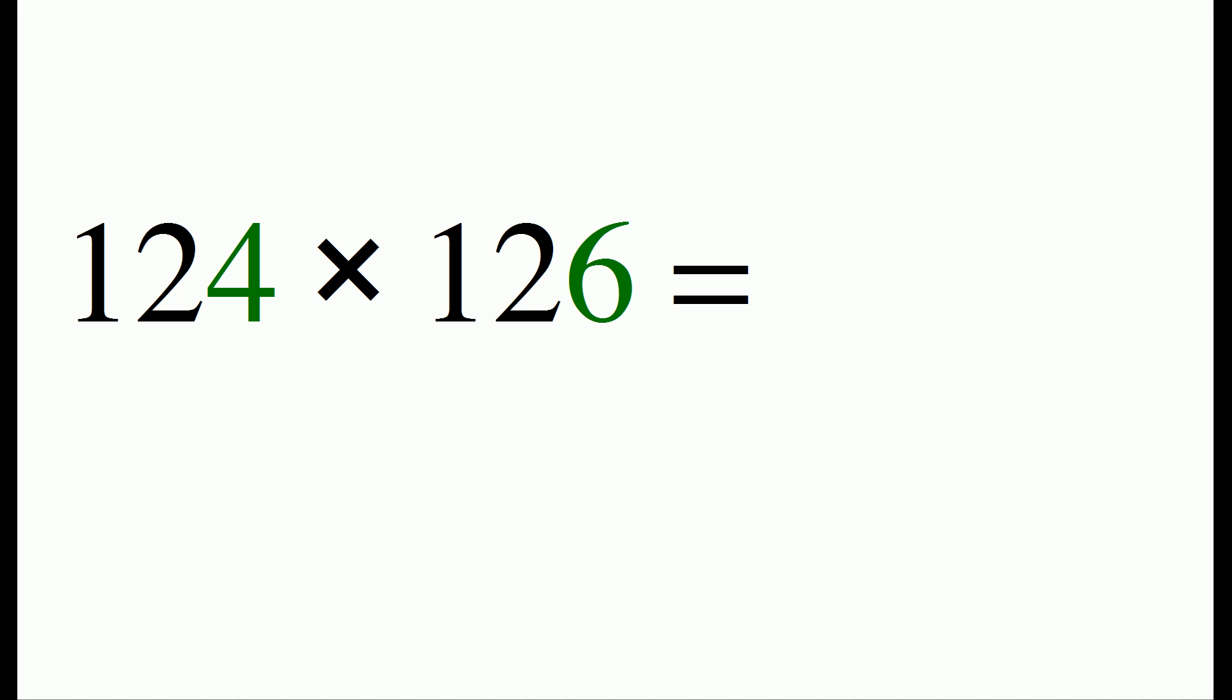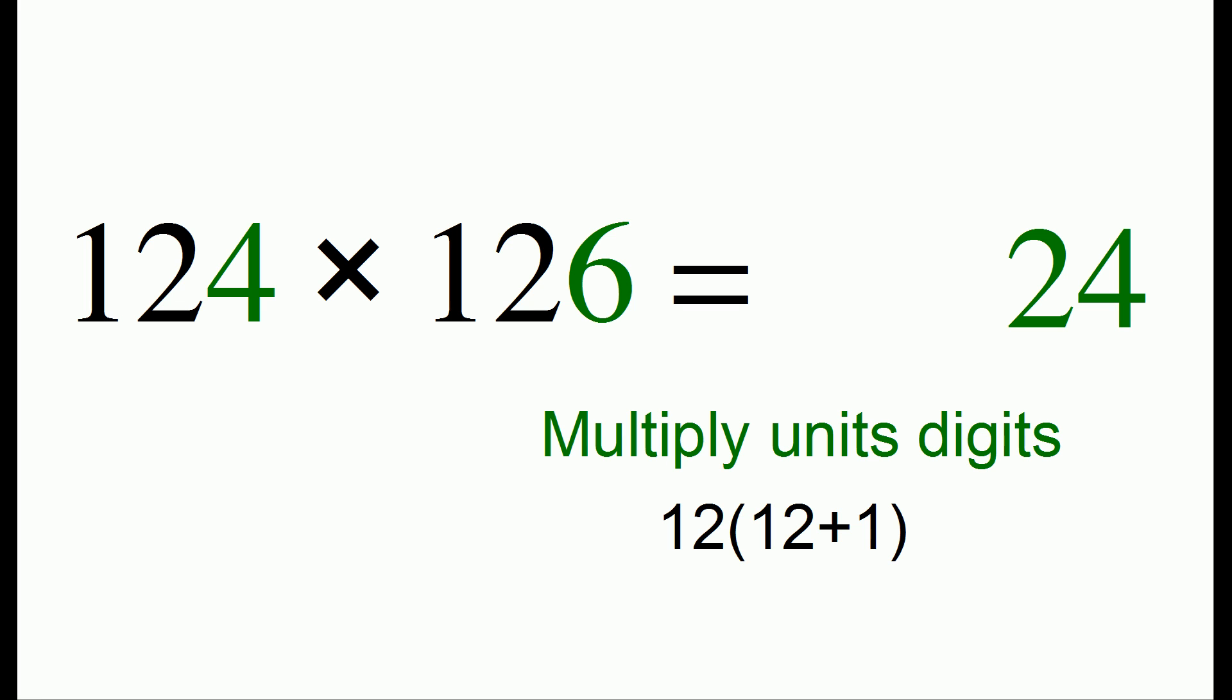We can also extend this to three digit numbers. Let's say we want to do 124 times 126. We multiply the units digits of 4 times 6 to get 24 and now we multiply the rest of the digits. So we have 12 in both numbers and we need to multiply it by 12 plus 1, 13.